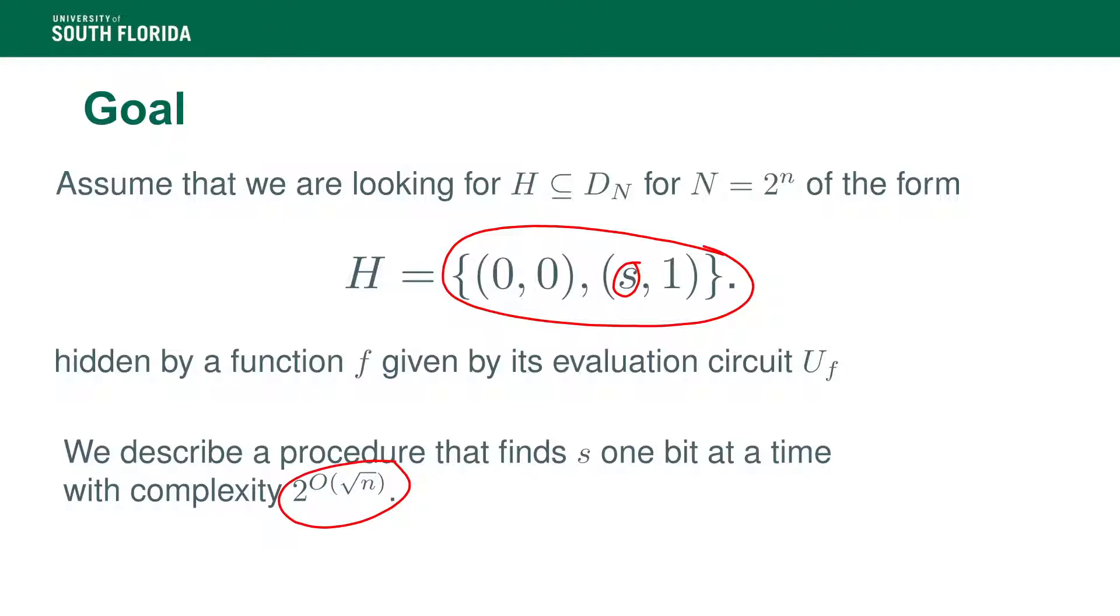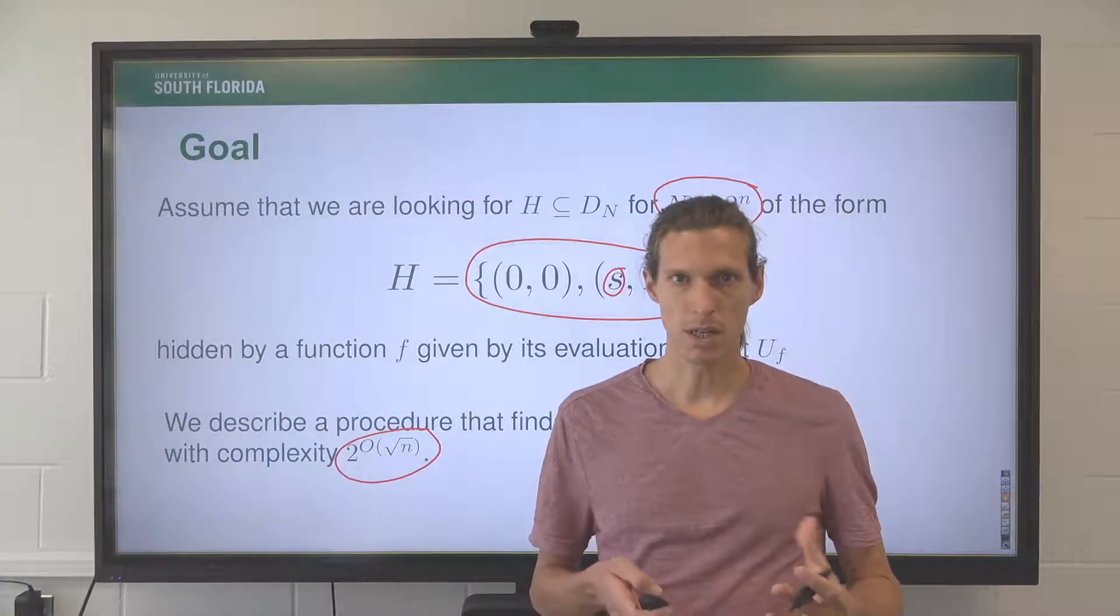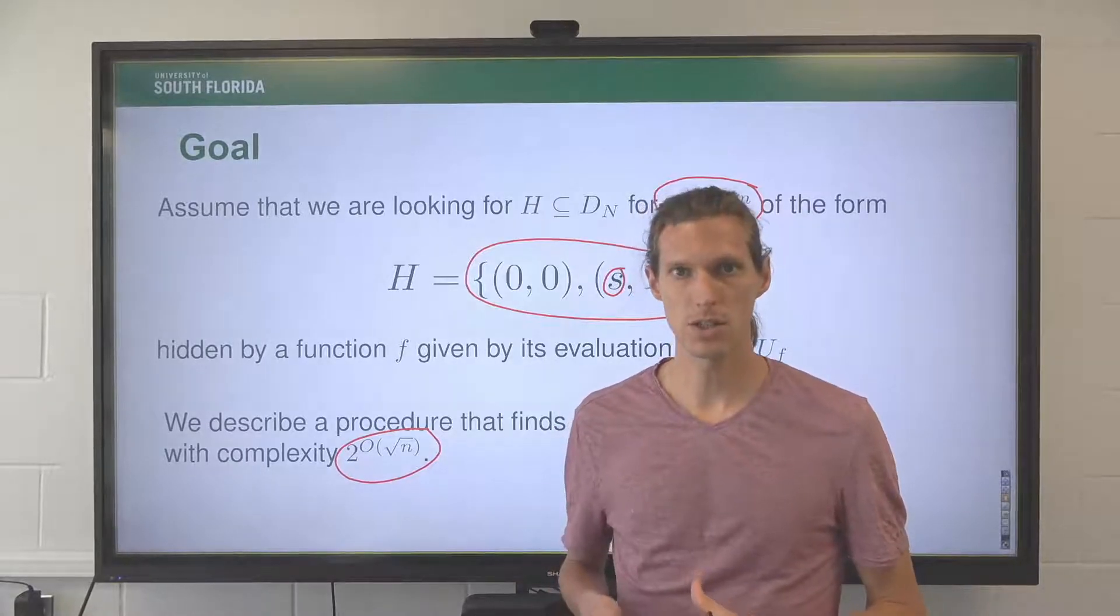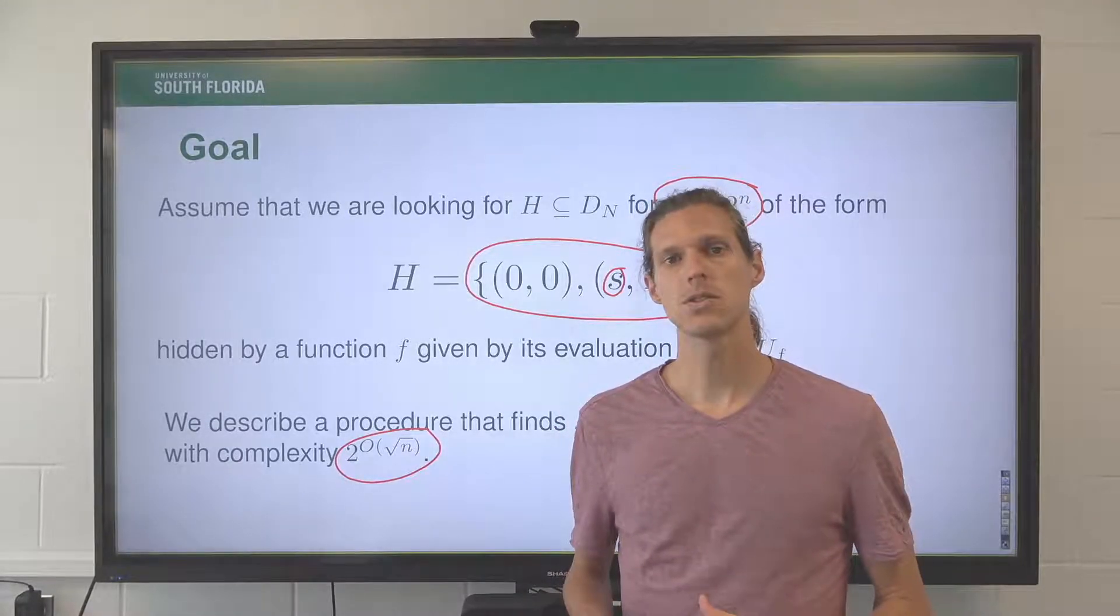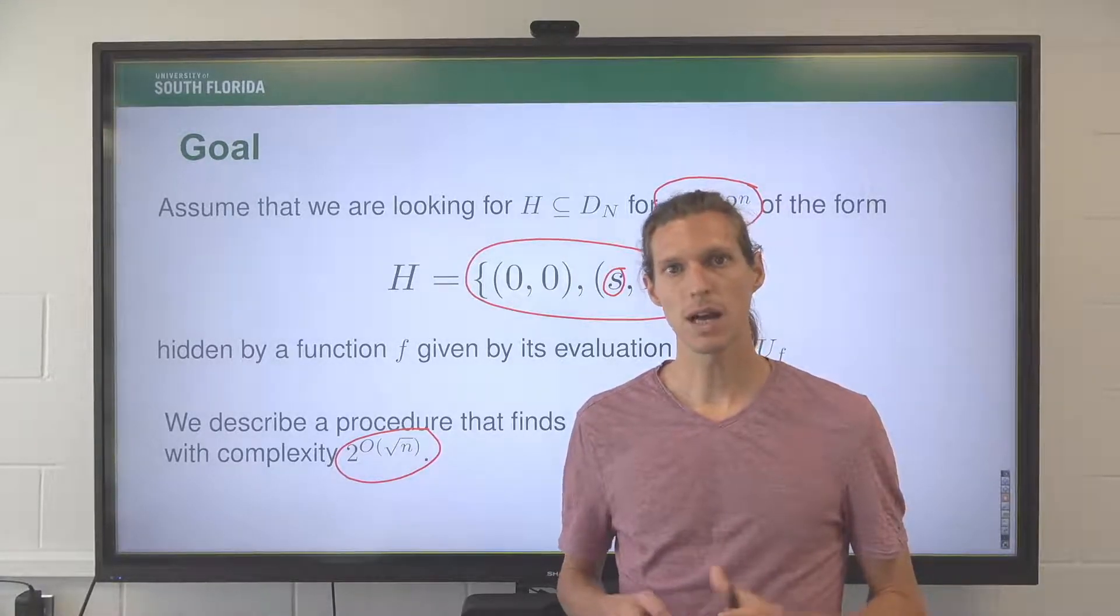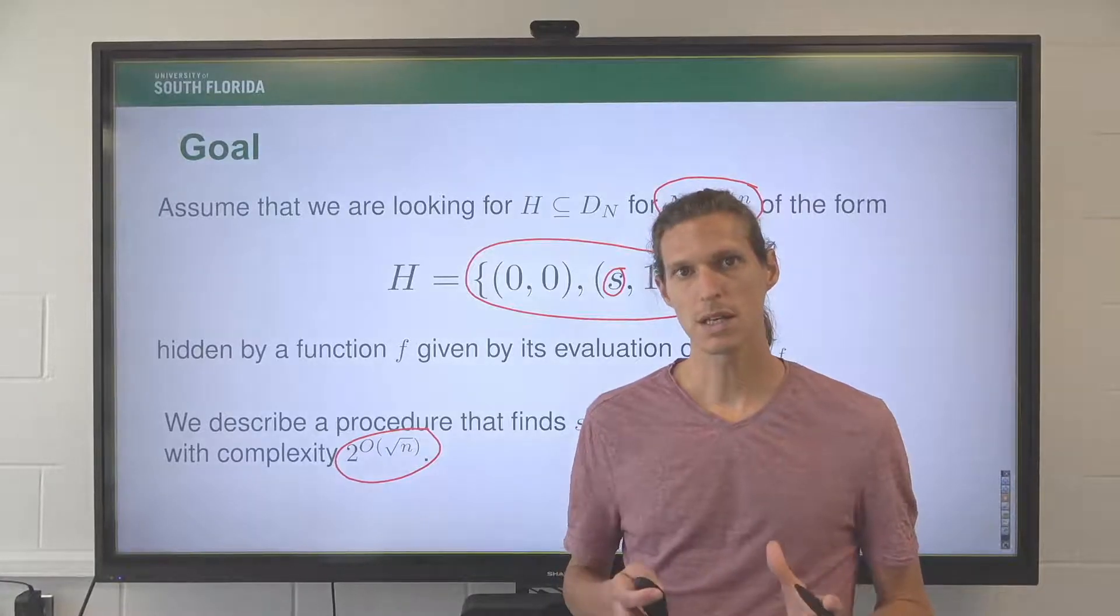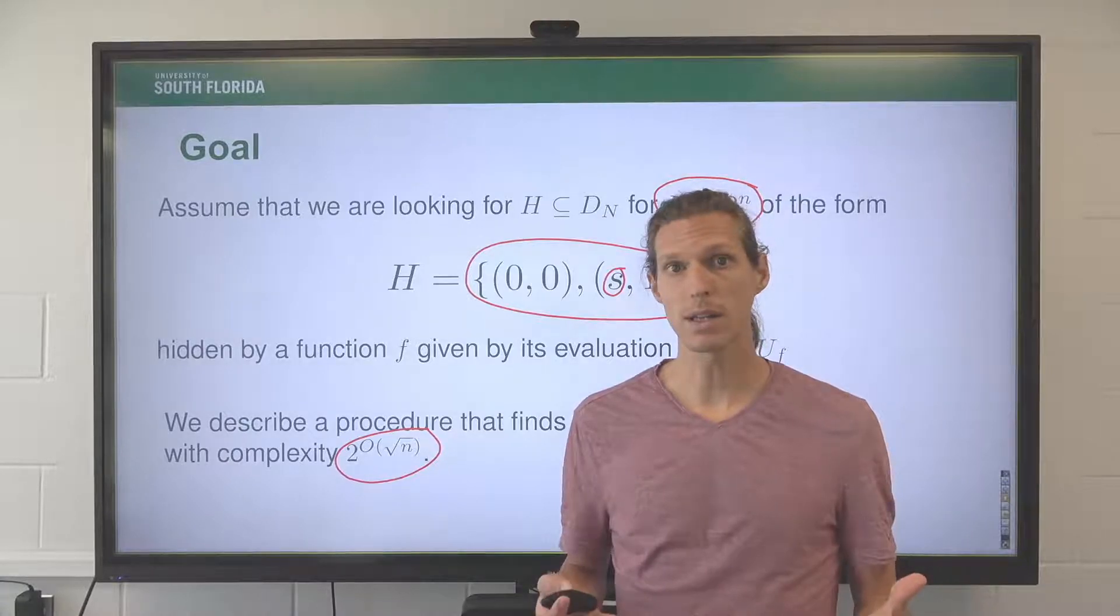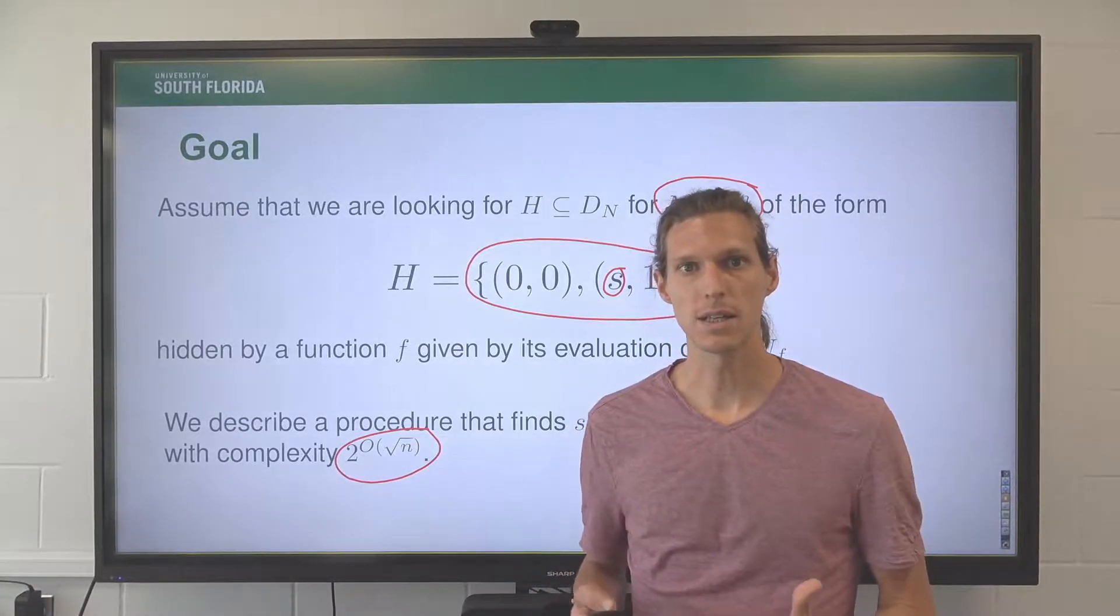We're looking at here n being the log of N, so we assume here that we have a modulus of the form 2 to the n, but there is a straightforward generalization for arbitrary N. Here, only N of the form 2 to the small n, and we will see how the performance is 2 to the square root n, which is quite an improvement over what we would know classically.